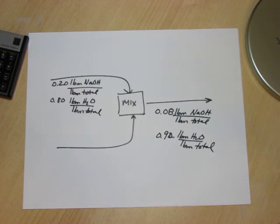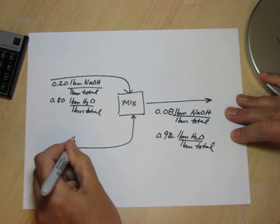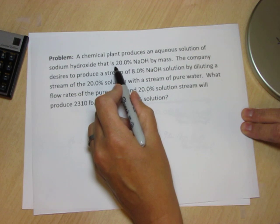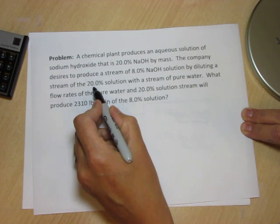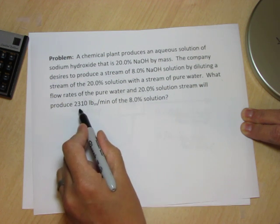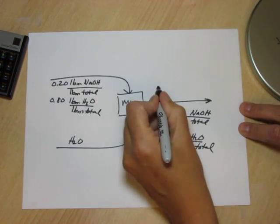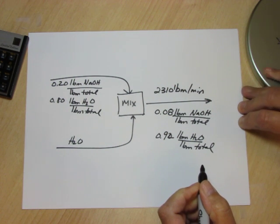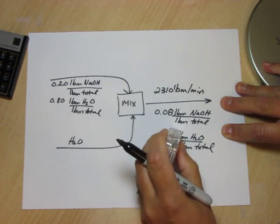The stream that we're going to use to do this dilution is a pure water stream so this is pure water. Reading again, chemical plant produces this stream. You want to produce a dilute stream by mixing the 20% with pure water. What flow rate of pure water and concentrated stream will produce 2310 lb/min of the 8%. So we do also know that there is 2310 lb/min of this stream. That's everything that's been given in the problem.